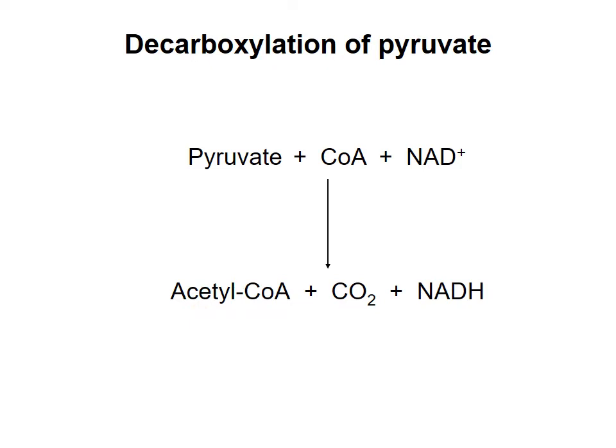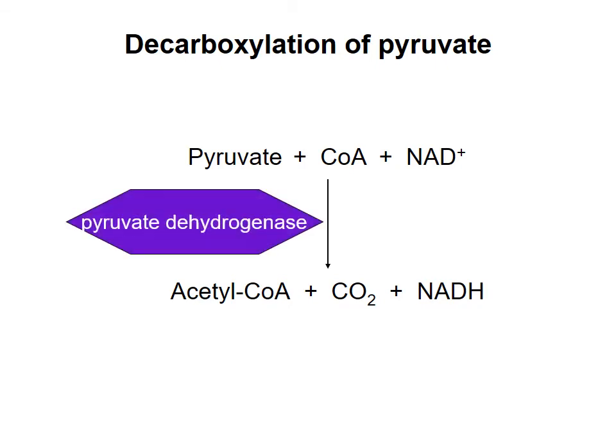This reaction is catalyzed by an enzyme called pyruvate dehydrogenase, which is a very complex enzyme. It's got 60 different polypeptide chains and multiple enzymatic activities happening to make this process work. We're not going to go into all the detail of that because I'm more interested in the position of this reaction in metabolism and how it's regulated.